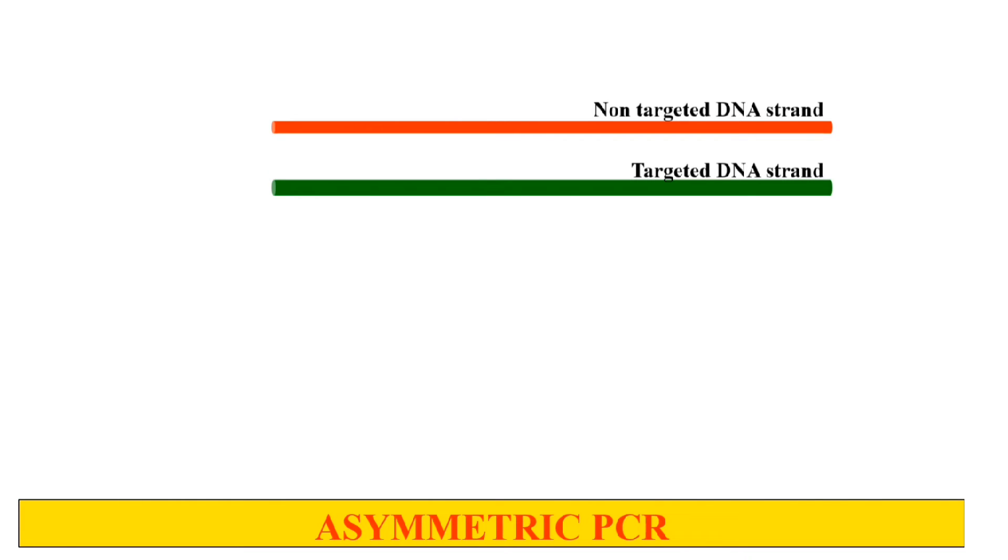So how will you perform asymmetric PCR? First, we add the primers. This red arrow represents the primer for the red non-targeted strand, which is in limited concentration. These blue arrows represent the primers used for amplification of the targeted DNA in green color. The concentration of these blue primers for the targeted DNA strand is more than the non-targeted DNA primers.